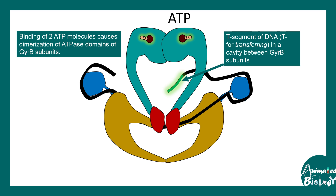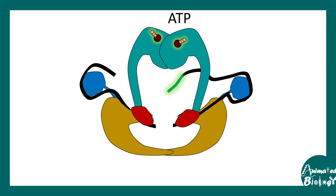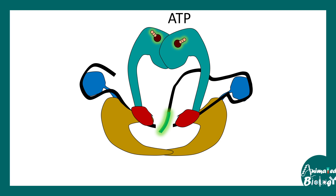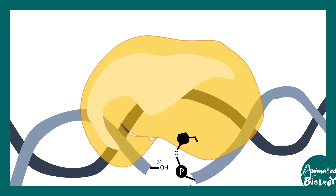There is a segment of DNA known as the T-segment, or transfer segment, which starts passing through the enzyme. The GyrA subunit acts as the cutter — it cuts and introduces a double-strand break in the DNA, allowing another strand to pass through this gap. The DNA cutting occurs via specific tyrosine residues that act as nucleophilic attackers, forming a transient DNA-enzyme hybrid which later resolves.